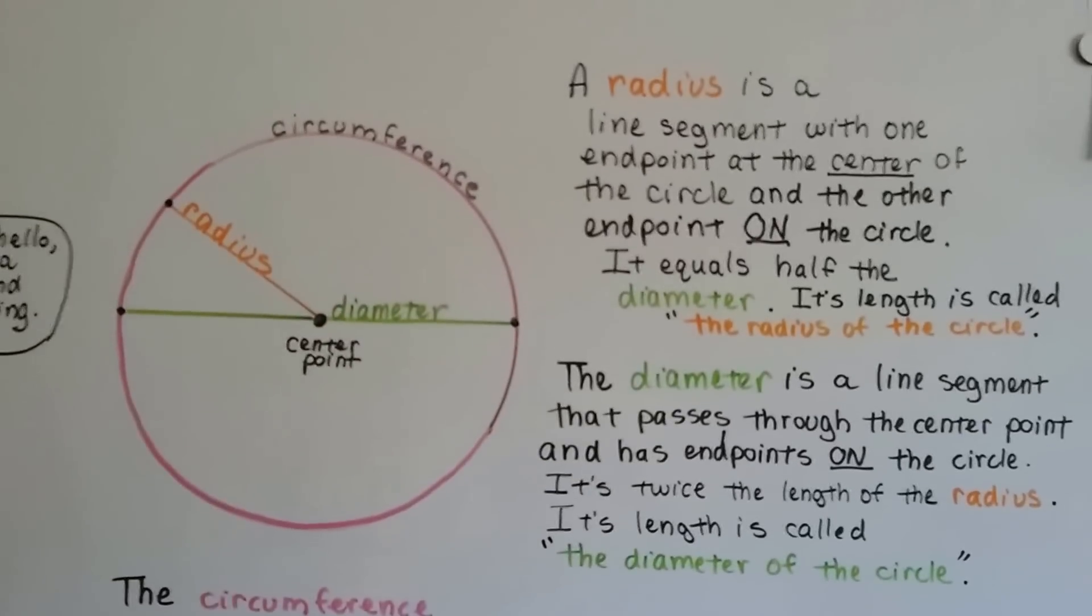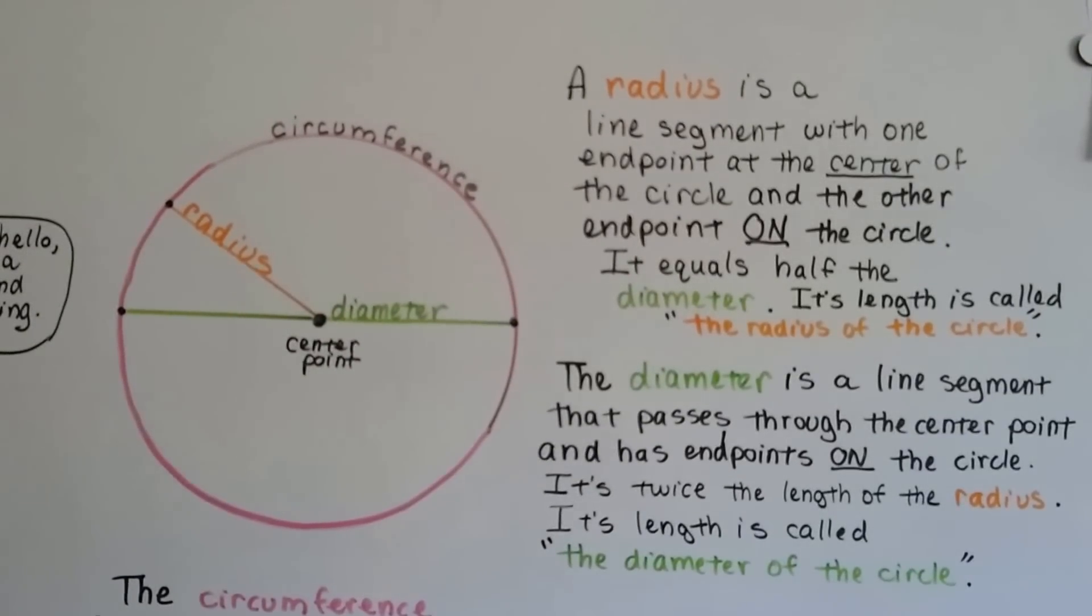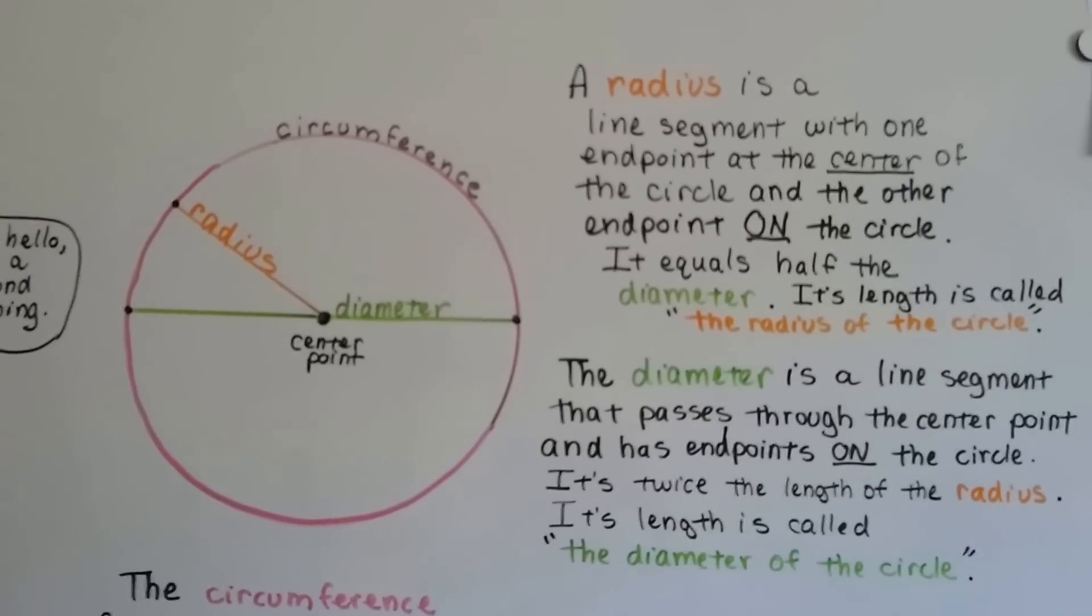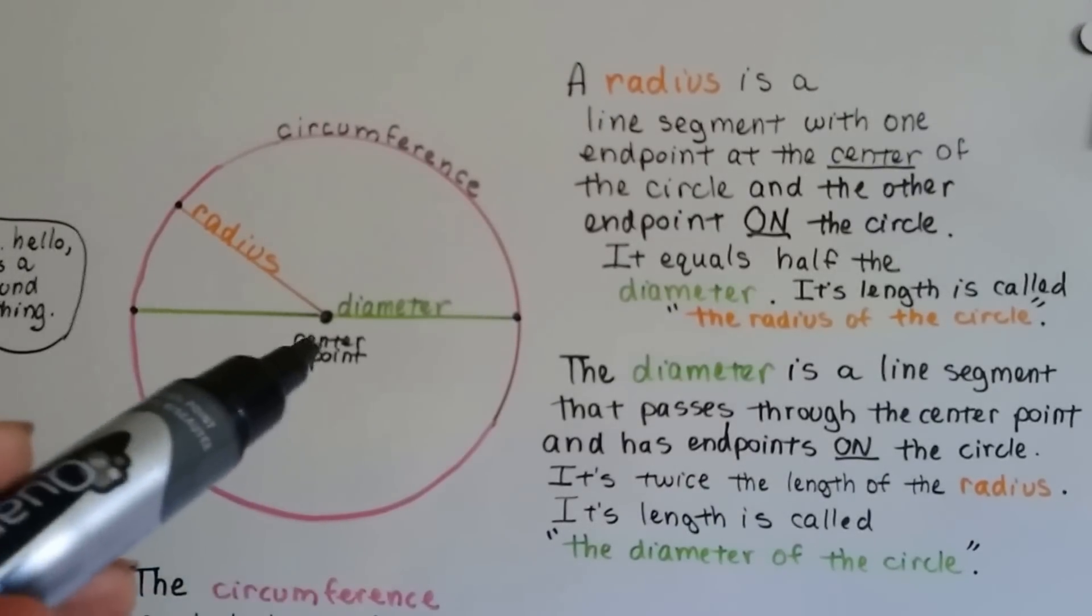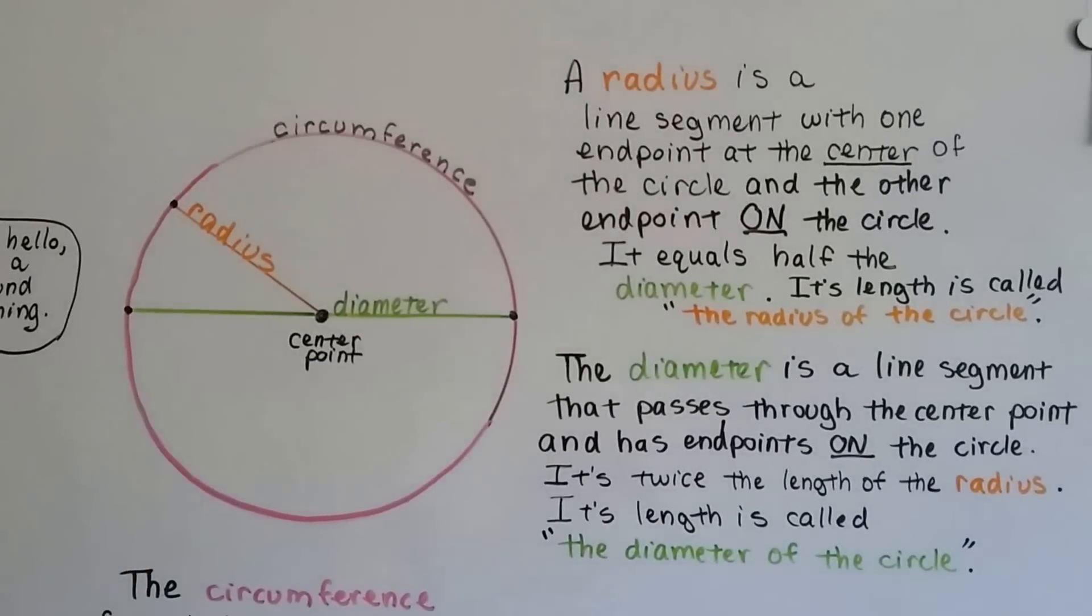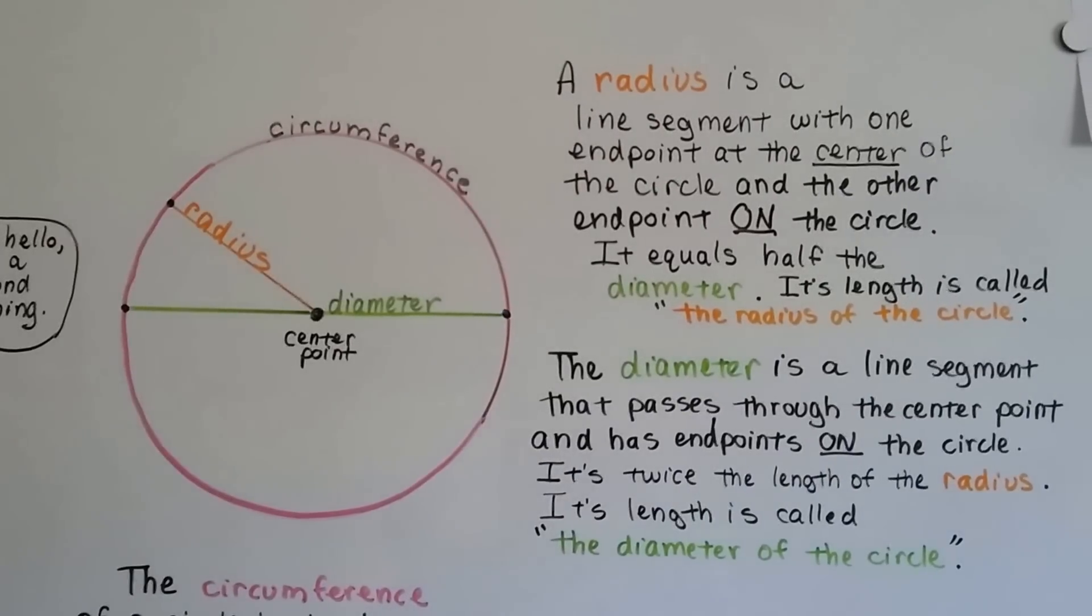So there's four main parts to the circle that we're going to talk about. There's the circumference, the radius, the diameter, and the center point. You can see that the center point is right here in the center. That makes sense, doesn't it? It's the center point.